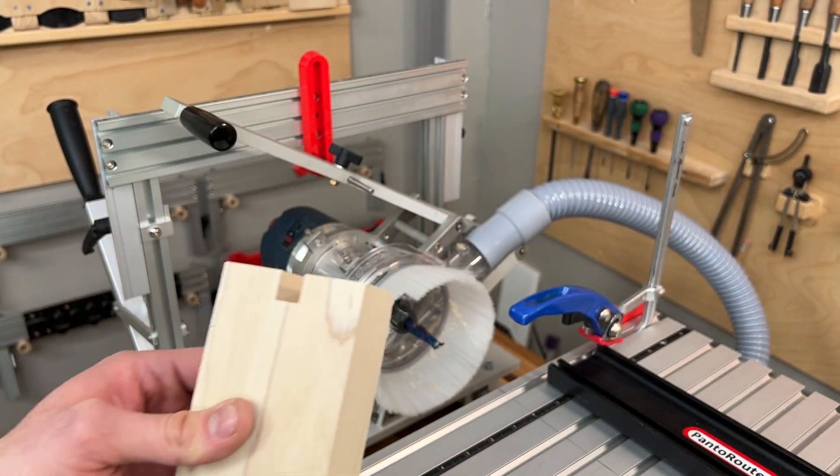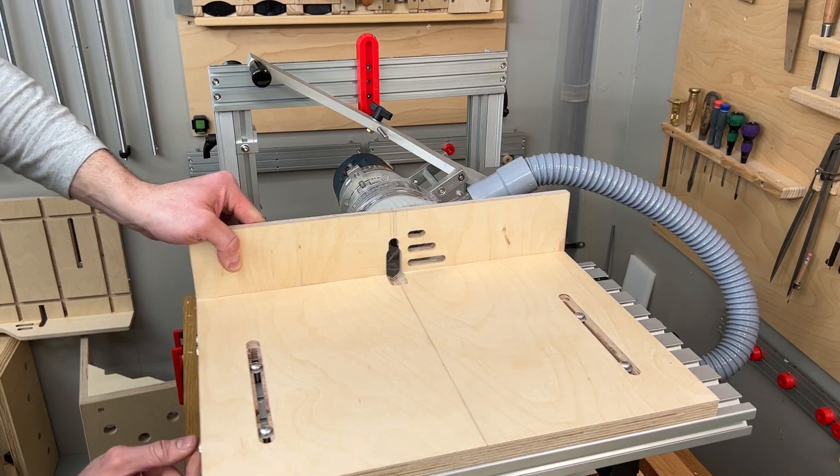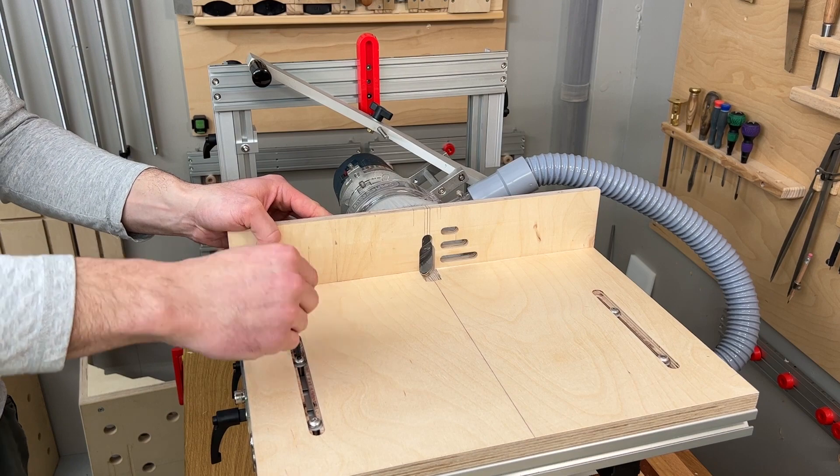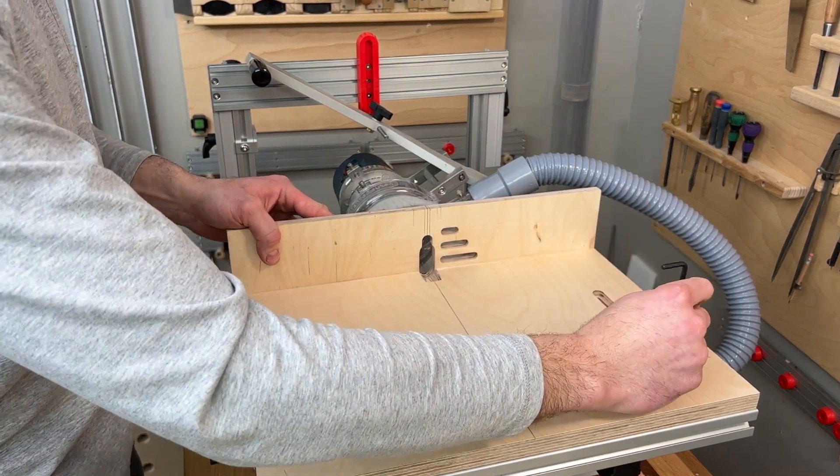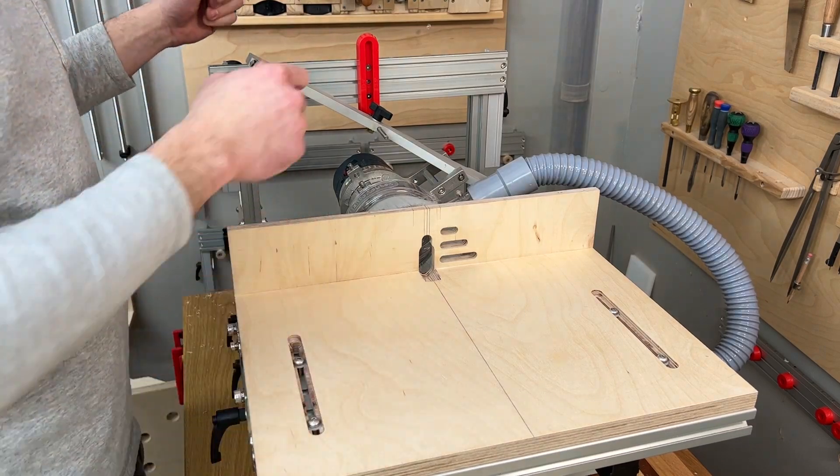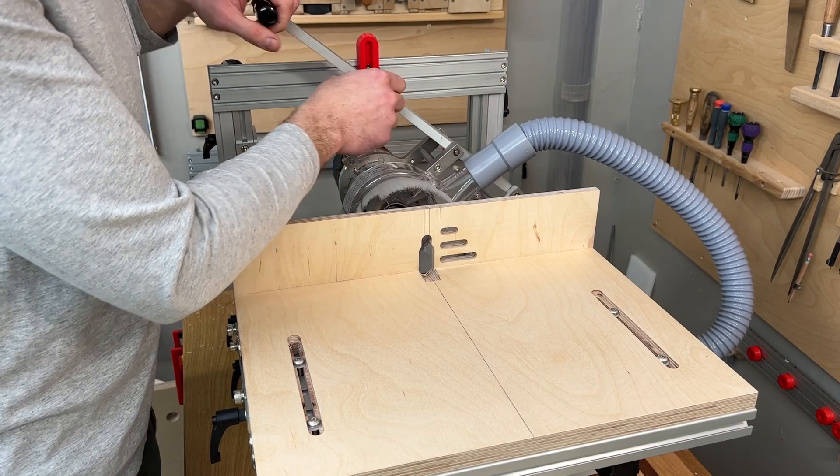The digital gauge can be used for other operations around your shop and on your PantoRouter joinery machine. Here we wanted to set a rabbet to exactly a quarter inch deep. So we installed our auxiliary table, set the gauge to zero, and moved our bit measuring the depth of cut to exactly a quarter inch on the gauge.